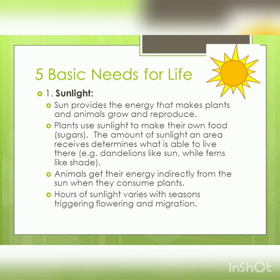Now let us look further on sunlight. Sunlight provides energy to make the plants and animals grow and reproduce. Plants use sunlight to make their own food. The amount of sunlight an area receives determines what is able to live there. For example, dandelion needs sunlight while fern likes shade.